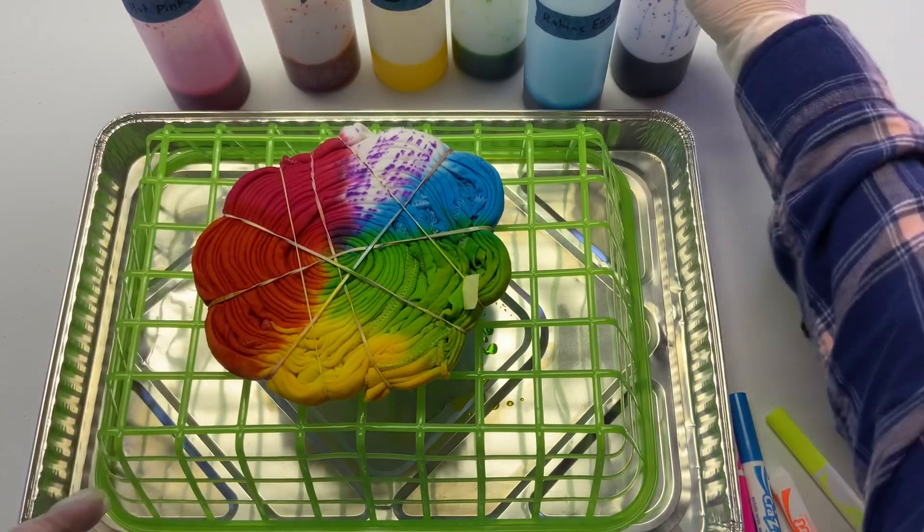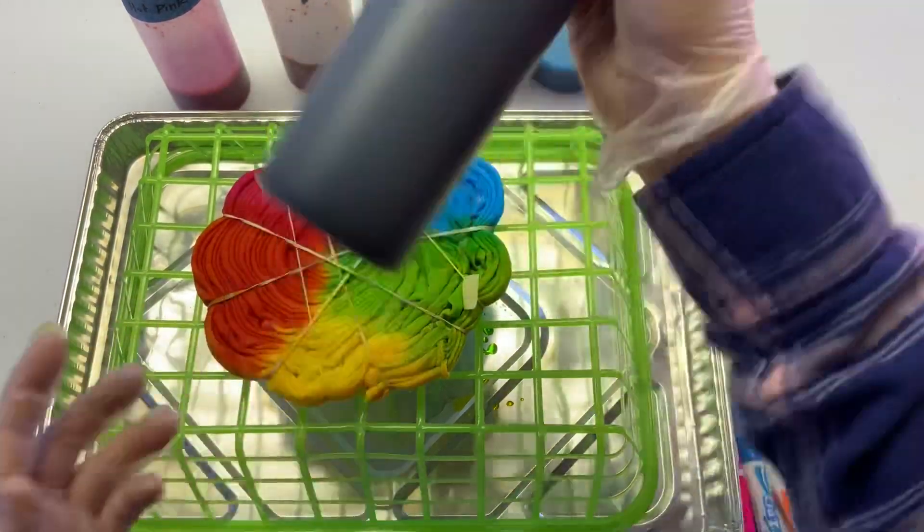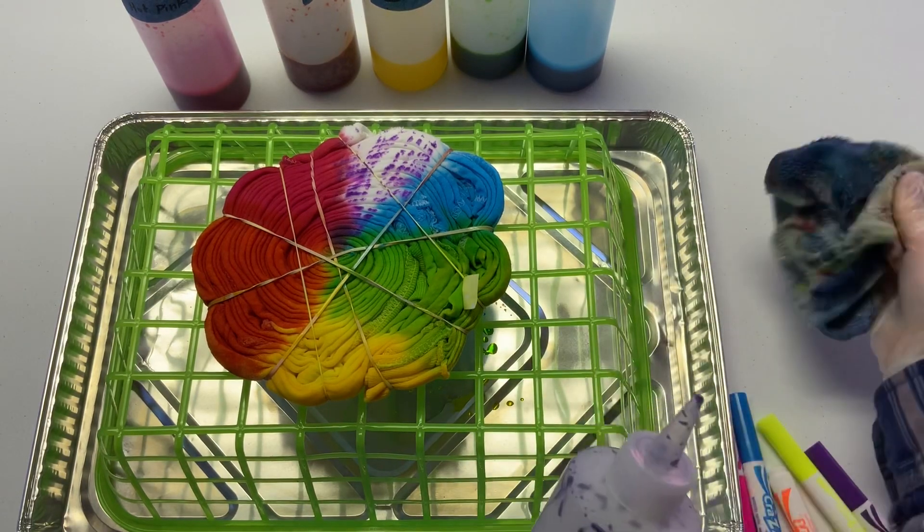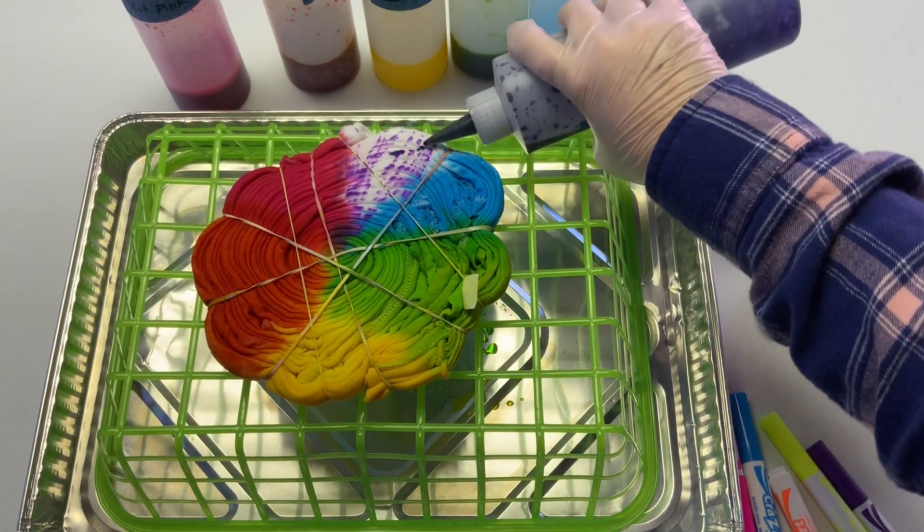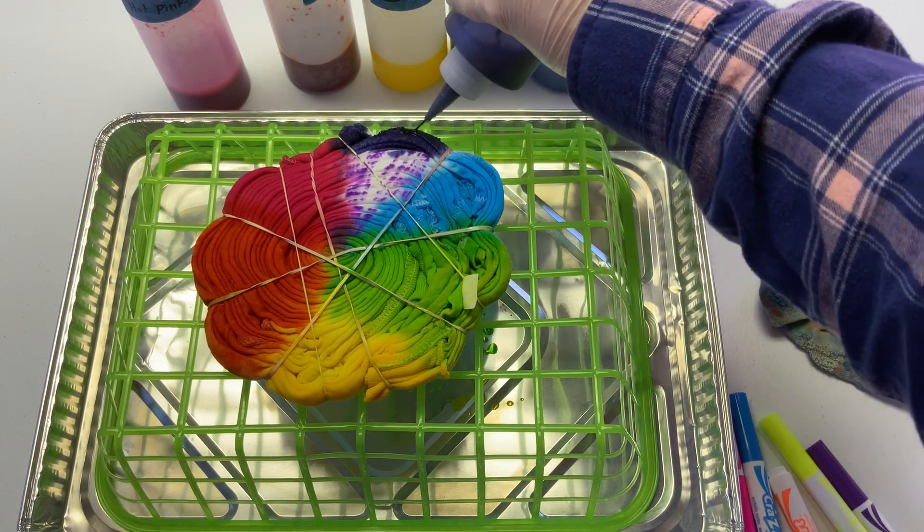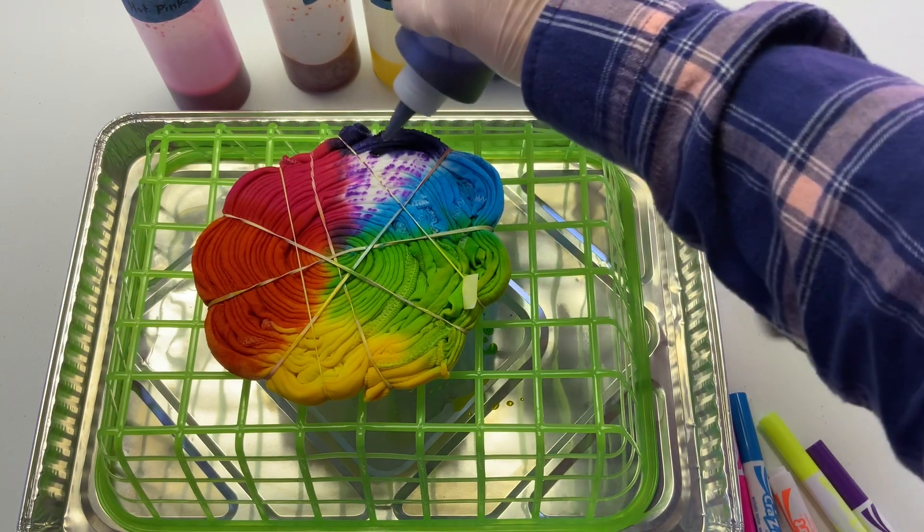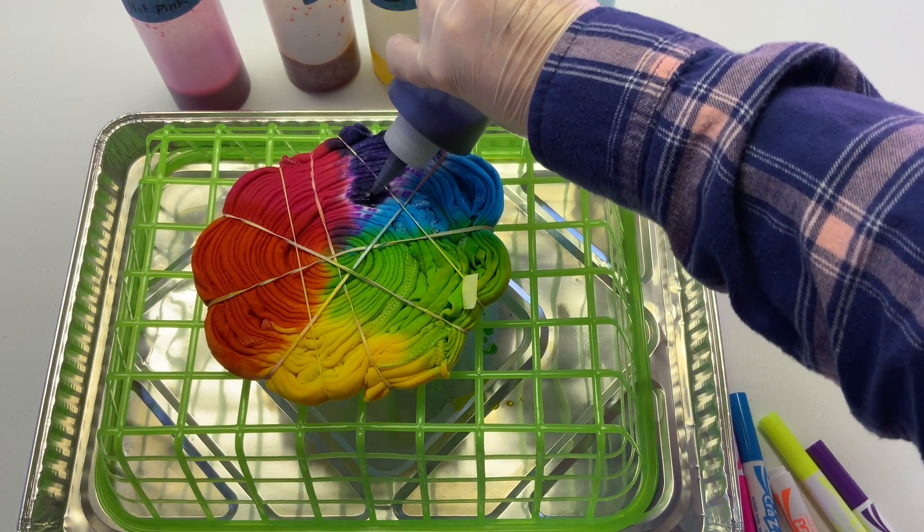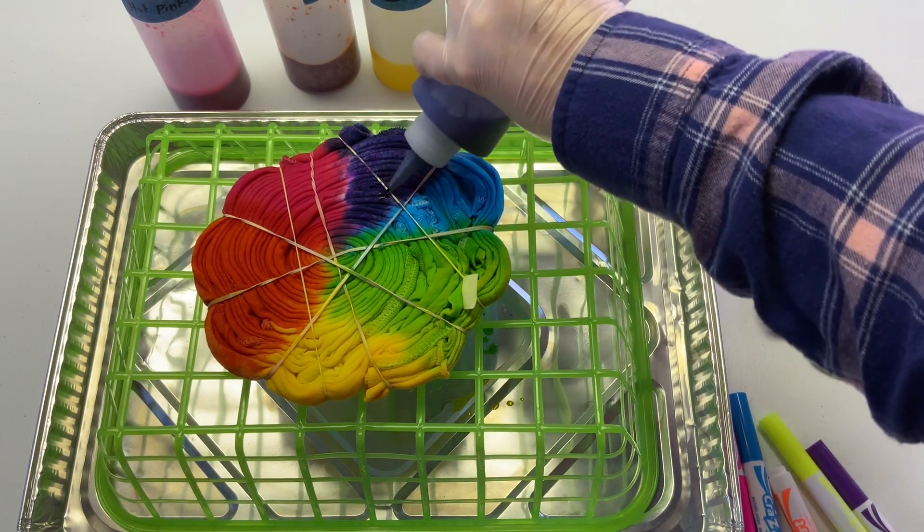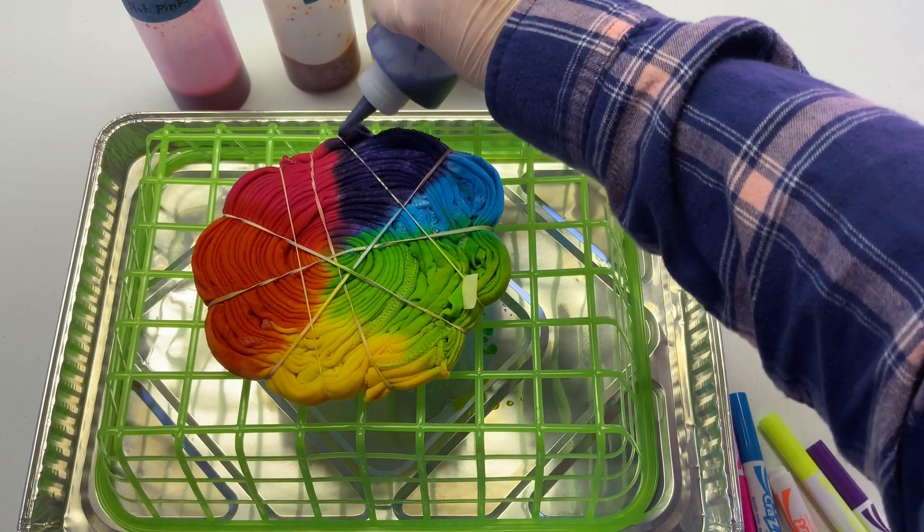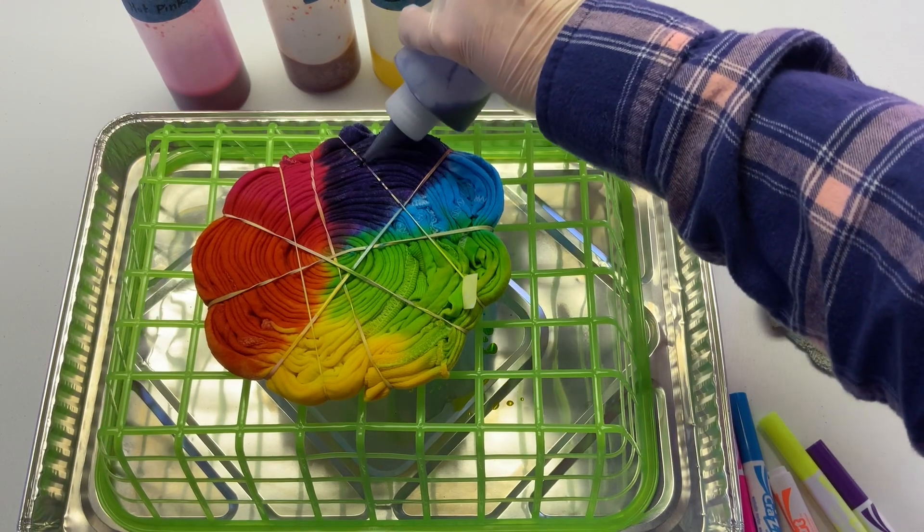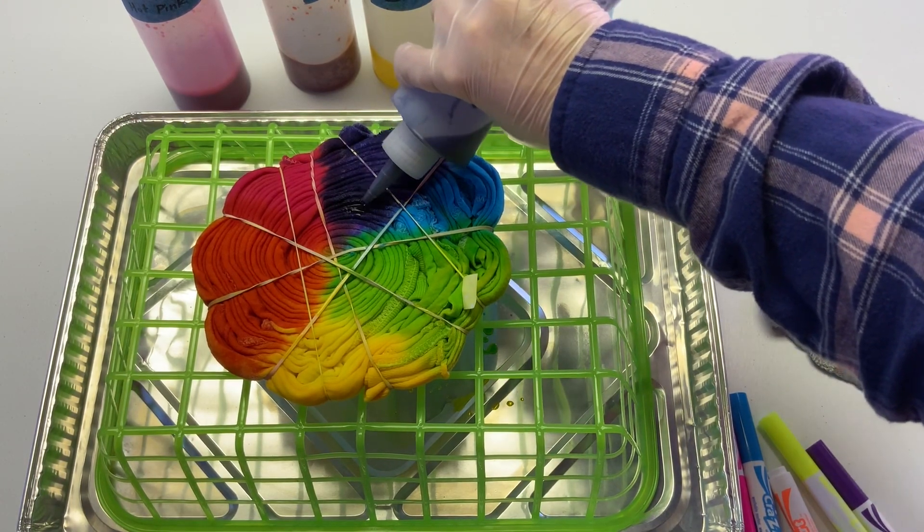And then last we're going to go with the lilac from Dharma Trading. And I'm going to do the same exact thing with this, so I'm going to focus heavy on the back, bringing it in towards the center, overlapping the turquoise and the hot pink, because they'll blend and make their own pretty color, trying not to bring it up to the center spiral.